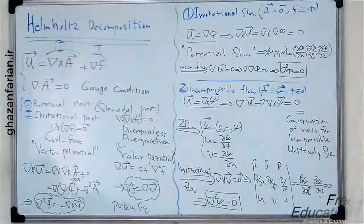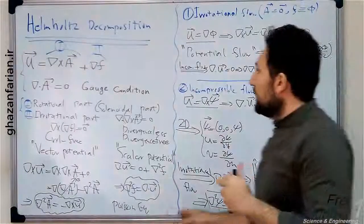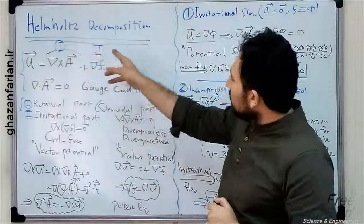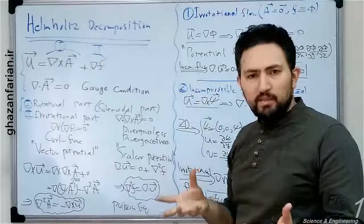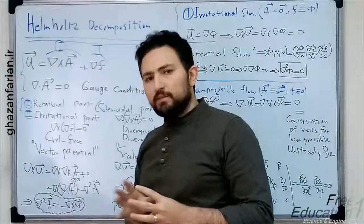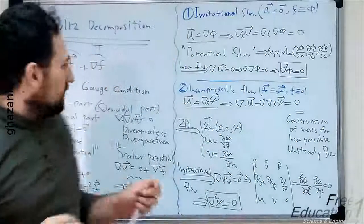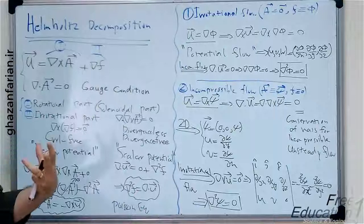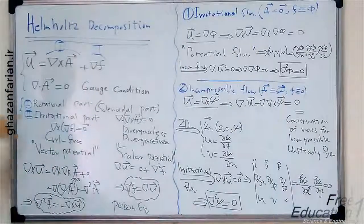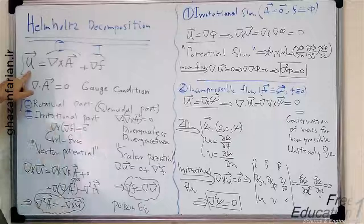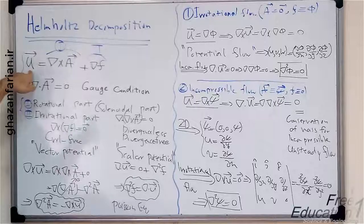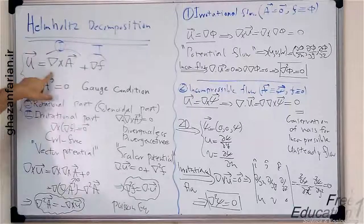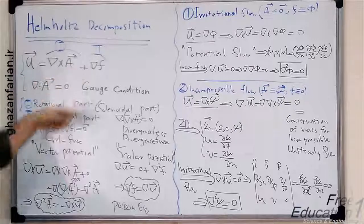Before defining these two concepts, let's talk about the Helmholtz decomposition. This is a mathematical theory which can be applied to any field of science. The Helmholtz decomposition talks about the decomposition of a vector field into two parts. We have an arbitrary vector field, which can be the velocity vector for example, and it can be written as a sum of two parts.